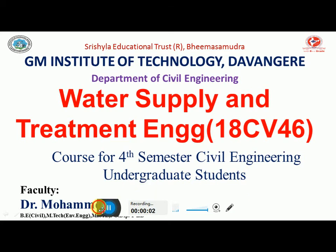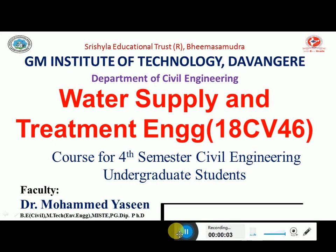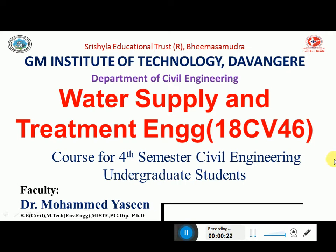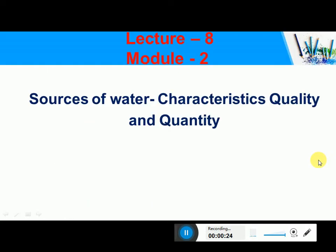Hello everyone. In the previous class we discussed about the different types of water treatment units. In this class we shall discuss about the sources of water, the water quality, the water resources on the surface of the earth, what is known by potable water, and sources of water characteristics — its quality and quantity.